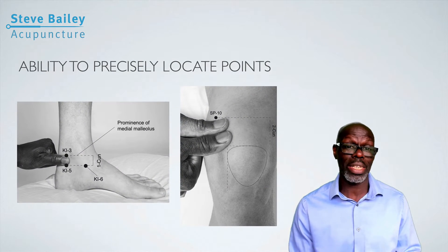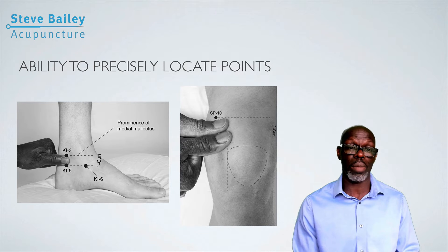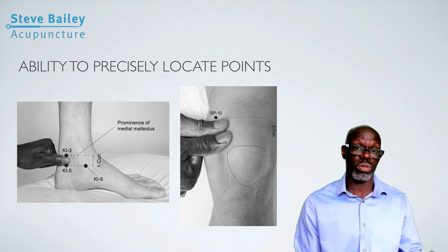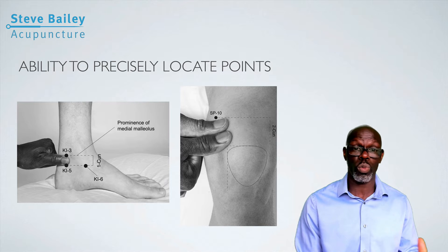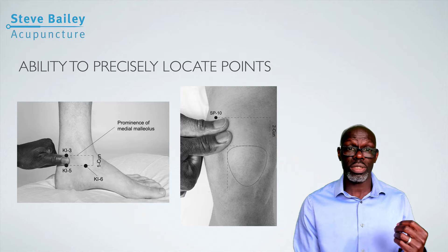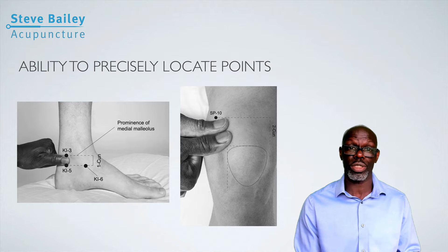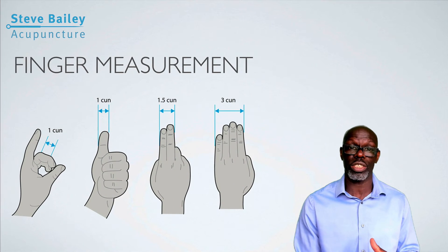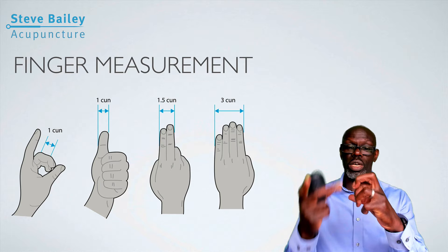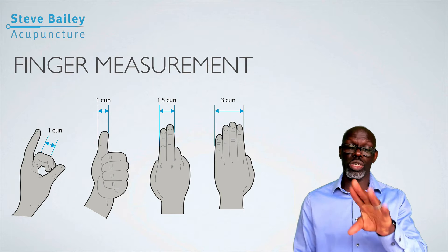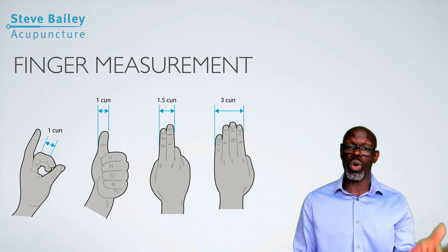Your ability to precisely locate an acupoint along a particular meridian is quite important. Two key methods have been developed — what you call the sun measurement. The sun measurement is like using your own anatomical inch or centimeter depending on your metrics. You have finger measurements and bone measurements, and these differ slightly depending on the method you're using. For finger measurements you may use one aspect of your finger, your thumb, two fingers, or all three to measure from one position to another.